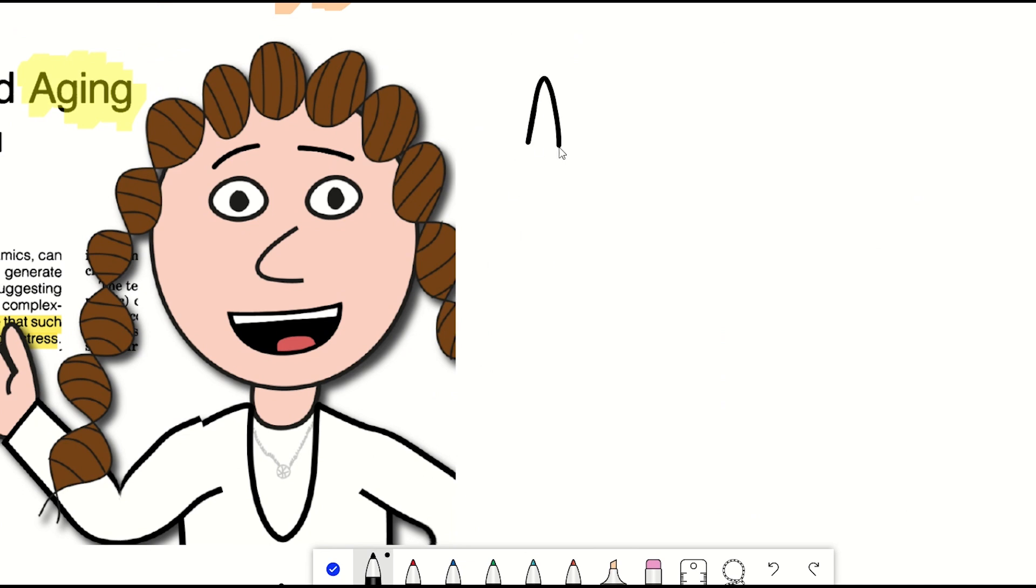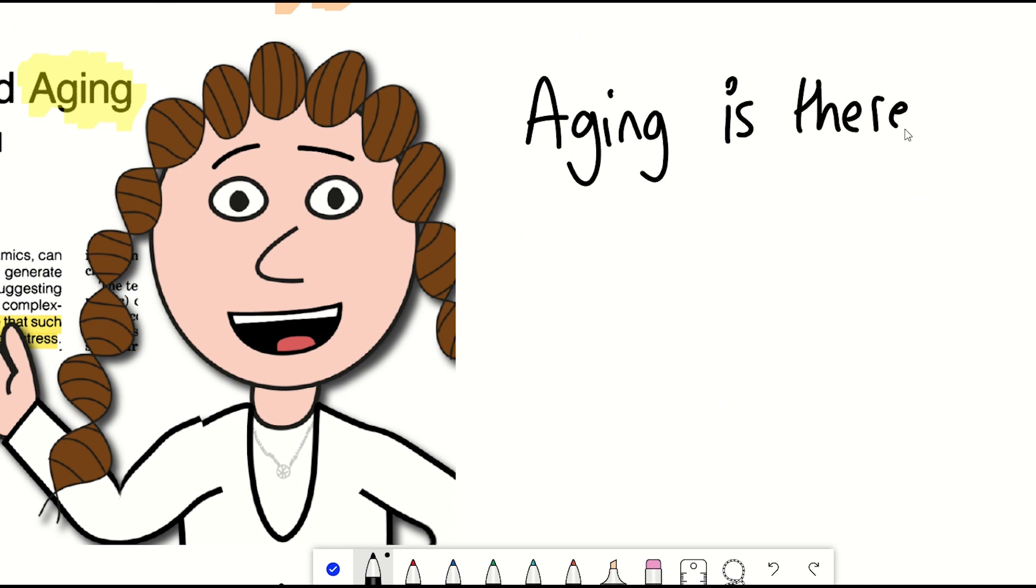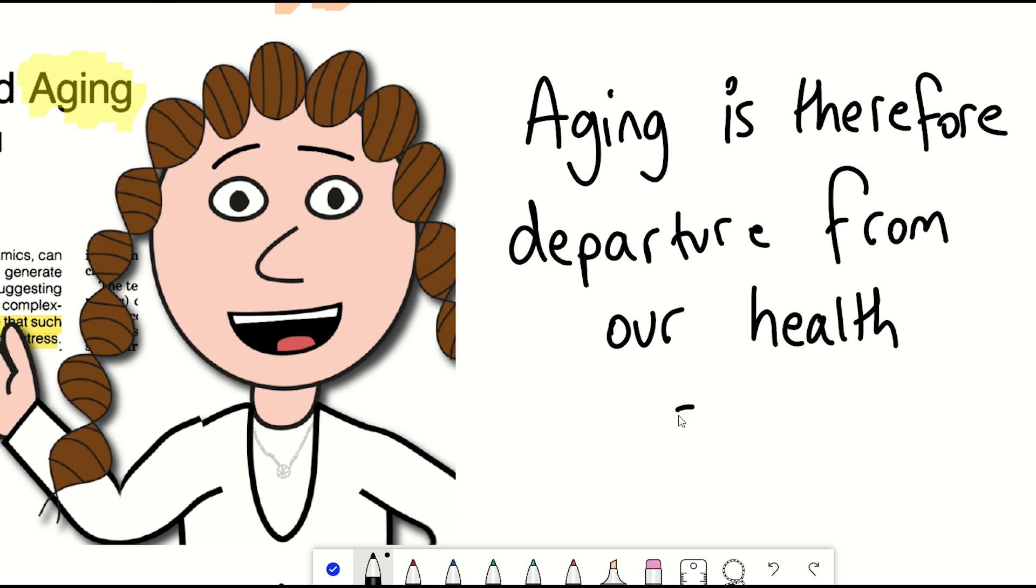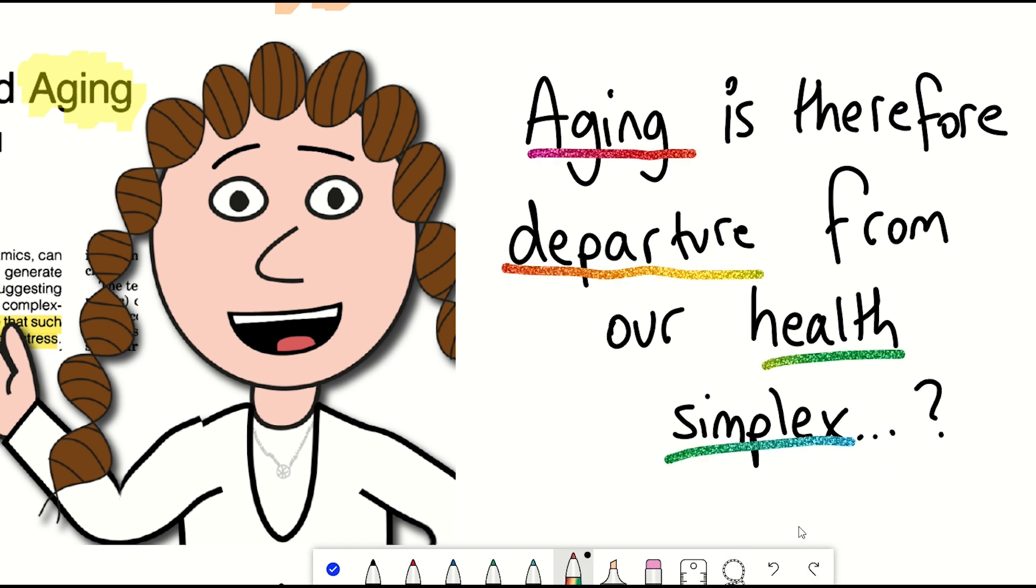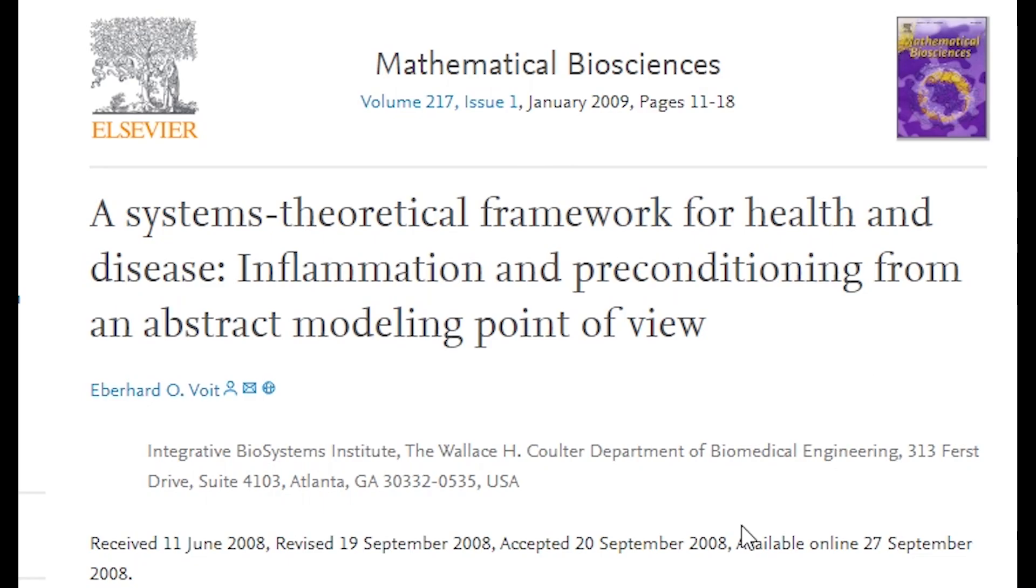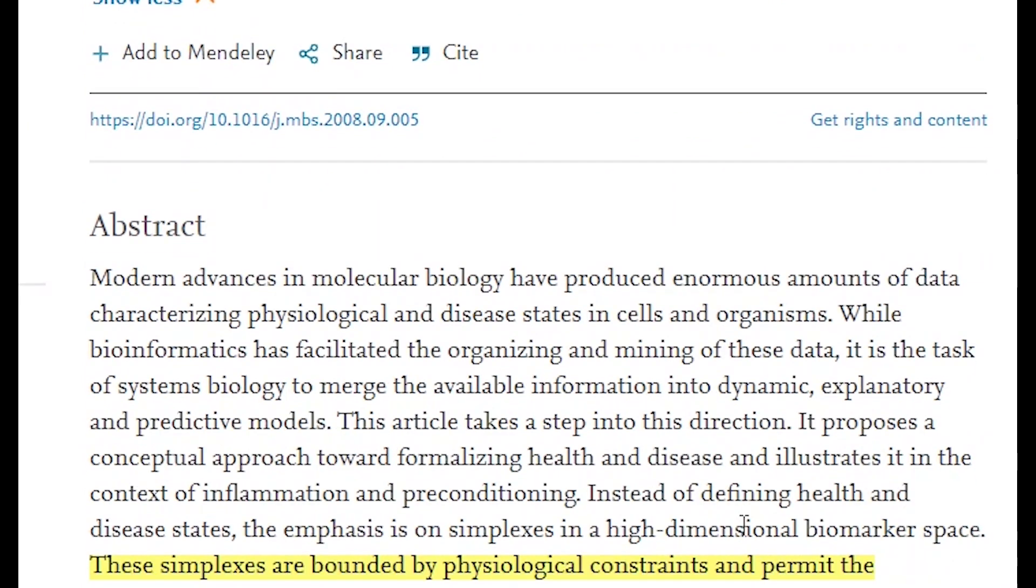But I like the idea that we can think of ageing as therefore being a departure from our health simplex. So simplexes, with their quantitative characterisation of many parameters, could be used to create personalised health trajectories, health risk profiles that change with age, and evaluate the efficacy of different treatment options.